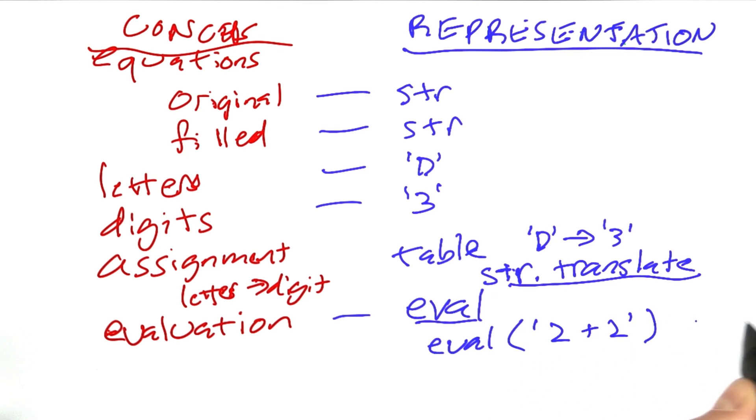And if we asked for eval of the string 2 plus 2 equals 3, Python would evaluate that using its normal rules and tell us that that's equal to false.